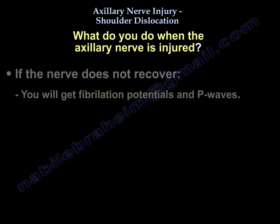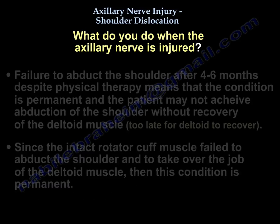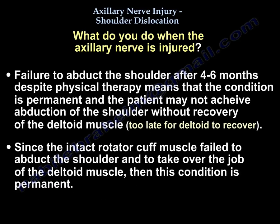However, if the nerve doesn't recover, you will get fibrillation potentials and P waves. Failure to abduct the shoulder after 4 to 6 months despite physiotherapy means the condition is permanent, and the patient may not achieve abduction without recovery of the deltoid. Since the intact rotator cuff failed to take over the job of the deltoid, the condition is permanent.